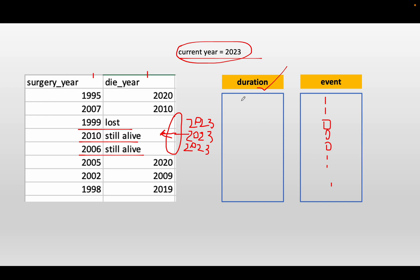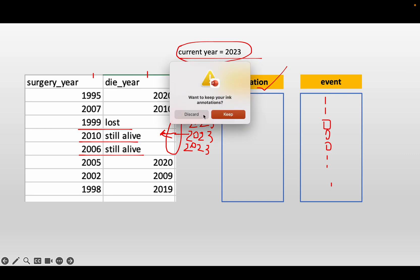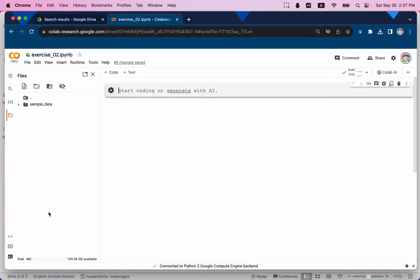For the duration, it's just a number — for example, 2020 minus 1995. Now we have the two additional columns, duration and event, and the data is ready for the Kaplan-Meier curve visualization. Let me stop sharing the slides and go to Colab to show you how we do this analysis using Python.